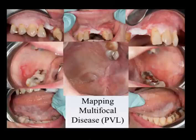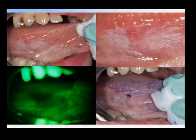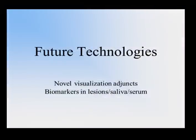Mapping multifocal disease: patients with proliferative verrucous leukoplakia are a nightmare to follow up with because they have multifocal disease. How do you follow them? You don't want to do too many biopsies. So are there ways to facilitate that surveillance process? I use some of these adjunctive techniques to monitor them over time.